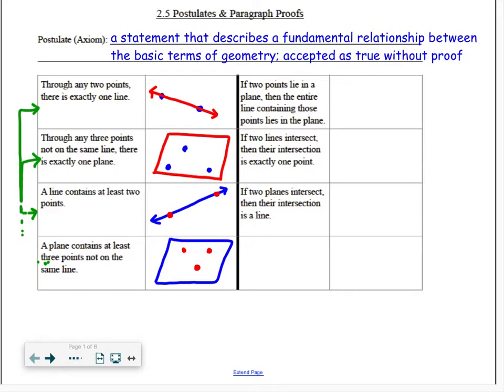The next postulate says that if two points lie in a plane, here's my plane, here are two points. Then this postulate says the whole line that contains those points must also lie in the plane.